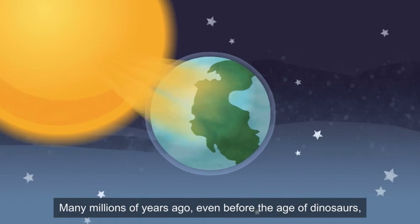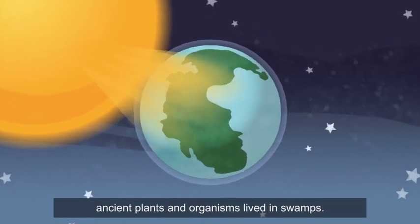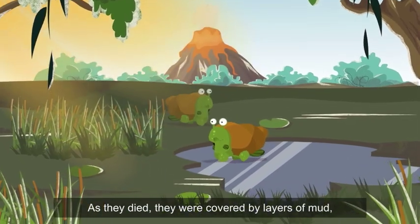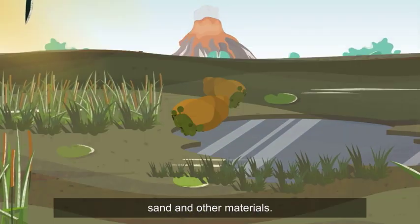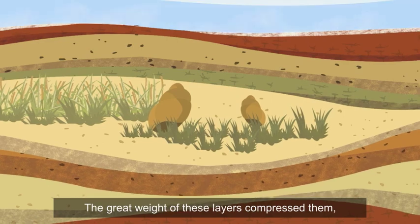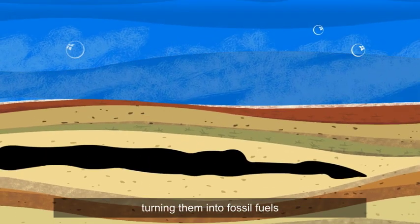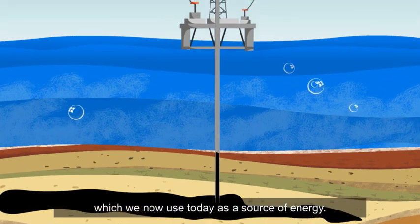Many millions of years ago, even before the age of dinosaurs, ancient plants and organisms lived in swamps. As they died, they were covered by layers of mud, sand and other materials. The great weight of these layers compressed them, turning them into fossil fuels, which we now use today as a source of energy.